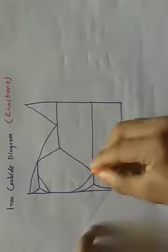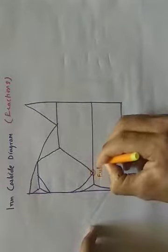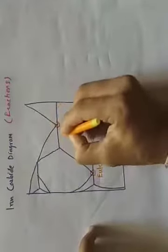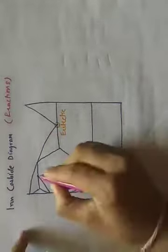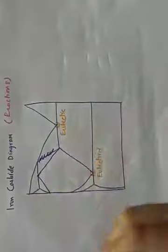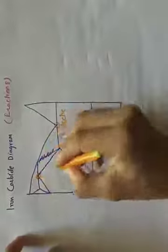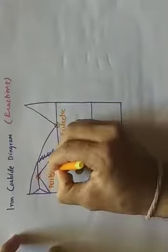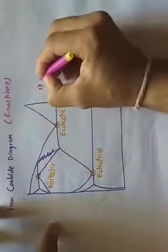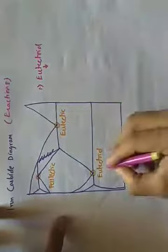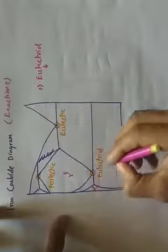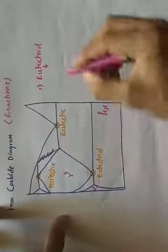The first point is the eutectoid point, the second point is the eutectic point, and the third one is the peritectic point. Starting with the eutectoid reaction — in this reaction we have austenite (gamma) on one side, alpha on another, and Fe3C. When austenite is cooled,